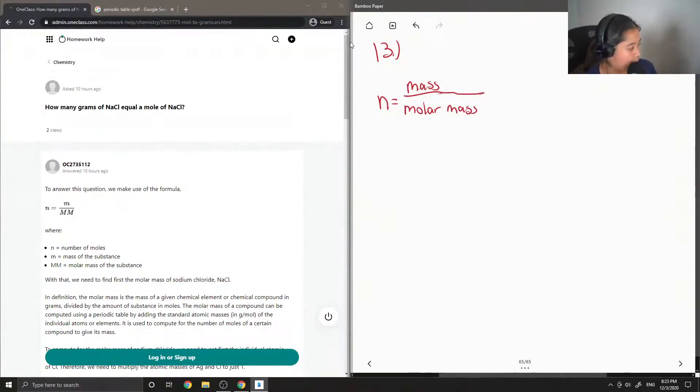So to answer this question, we would first need the molar mass of sodium chloride. So the molar mass of sodium chloride is equal to the sum of the atomic masses of sodium and chlorine. So since there is only one atom of each, then we don't need to multiply by any whole numbers.